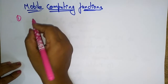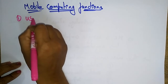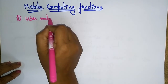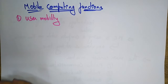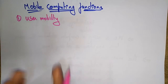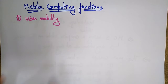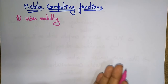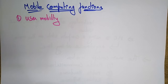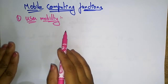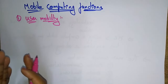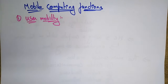The first characteristic is user mobility. Mobile computing provides user mobility — the user data moves from one physical location to another physical location and uses the same service. The user is using the same service while moving from one place to another place.